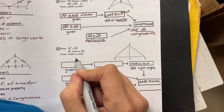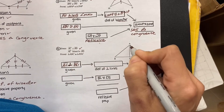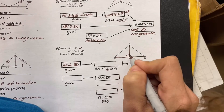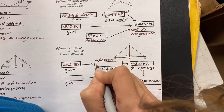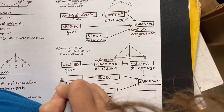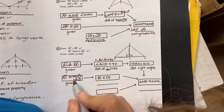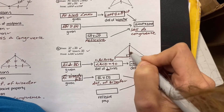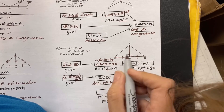Let's try another flowchart proof. Given: AC is perpendicular to BD. The definition of perpendicular lines means that those angles have to be right angles. So angle ACB has to be equal to 90 degrees, and angle ACD has to be equal to 90 degrees. What else is given? AC bisects BD. So we have the word bisect — we have to address it. Definition of bisector: if AC cuts this in half, then this side has to equal this side. If C is really in the middle, then BC must be equal to CD.